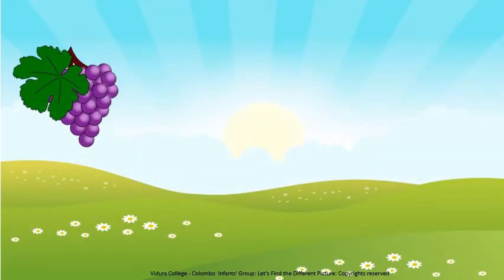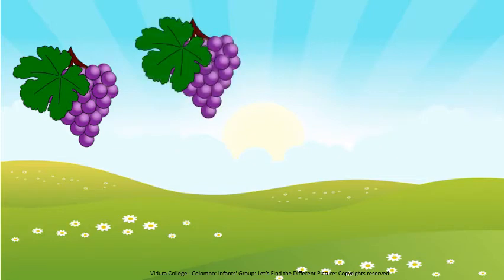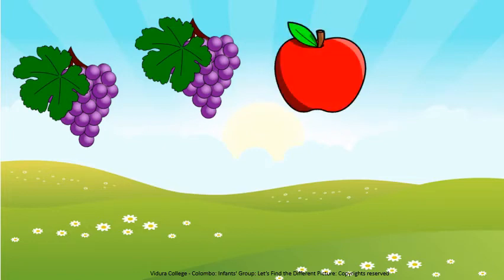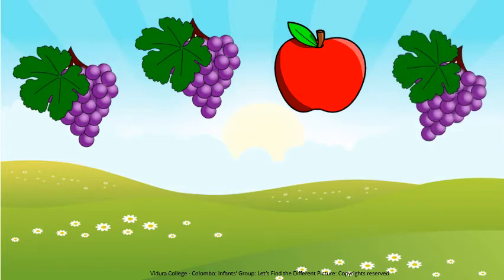What is this, children? It is a bunch of grapes. Again, we have a bunch of grapes. Oh, what is this fruit? Is it a bunch of grapes? No. It is an apple. Very good. What is this? It is also a bunch of grapes.